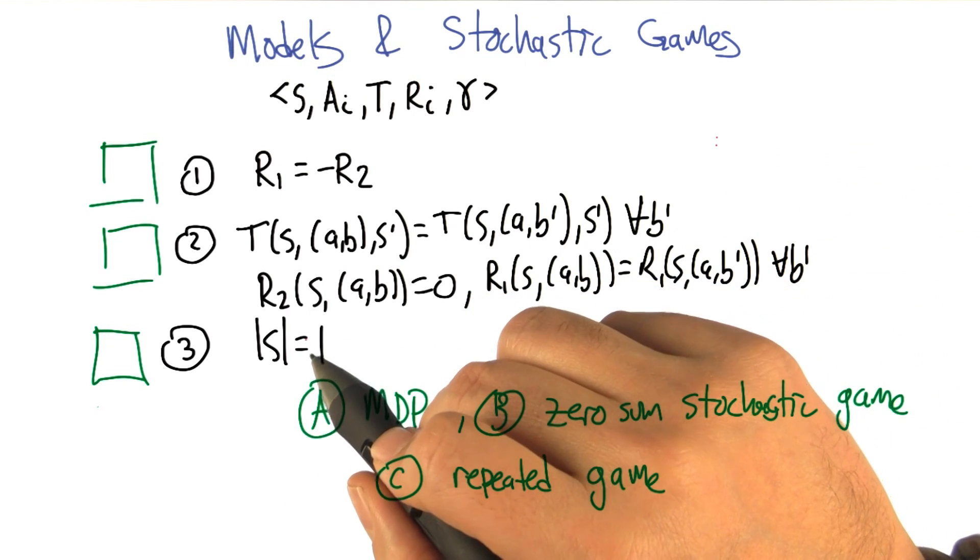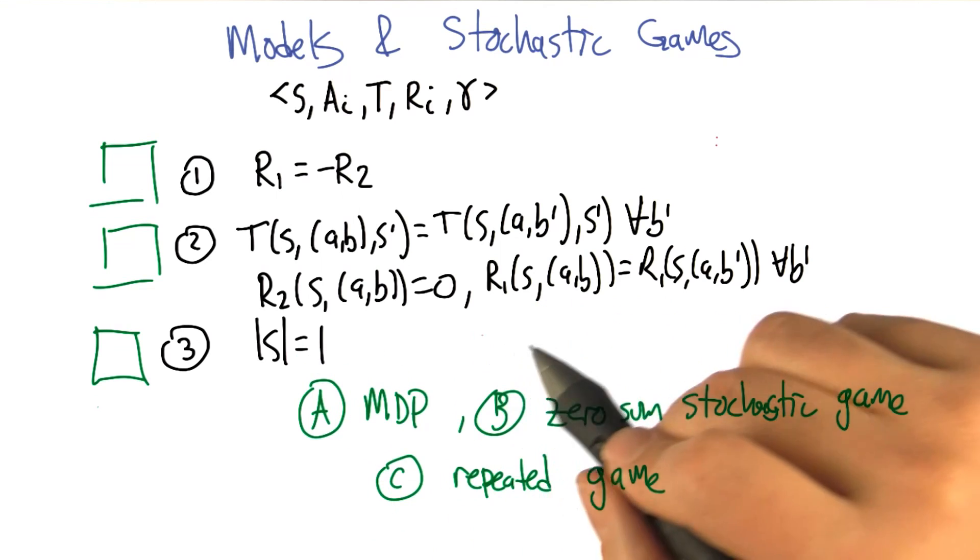And then in the third case, we are saying that the number of states in the environment is exactly one.